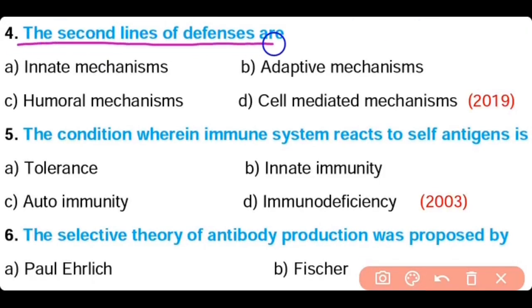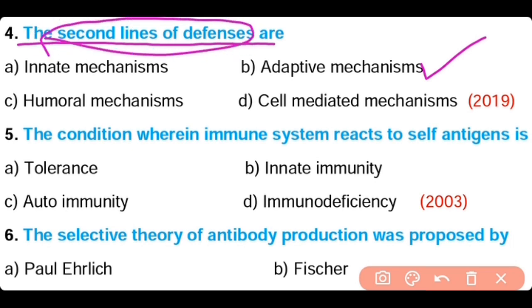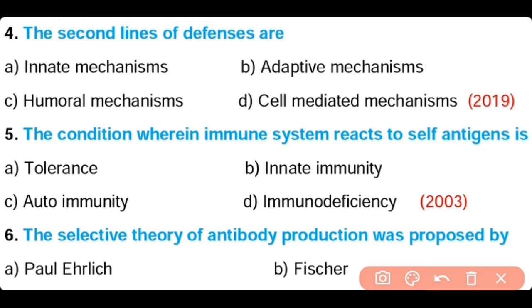Question number 4. The second line of defense is: innate mechanism, adaptive mechanism, humoral mechanism, or cell-mediated mechanism. The correct answer is Option B. Adaptive mechanism represents the second line of defense.